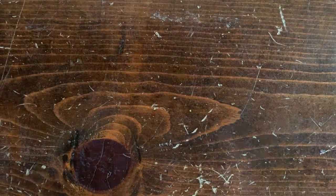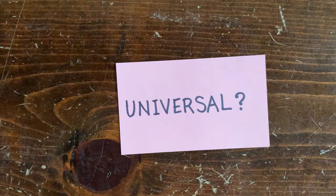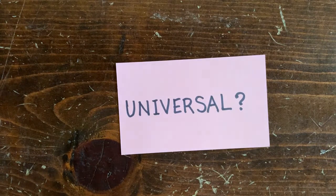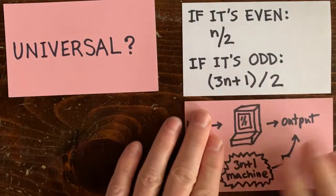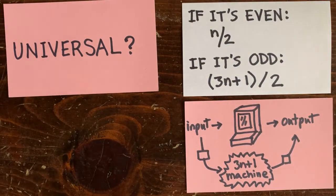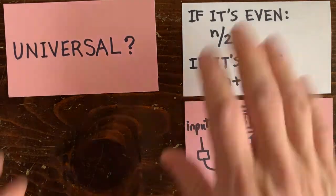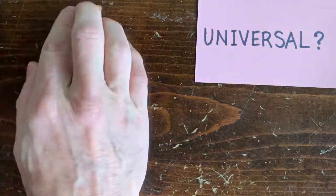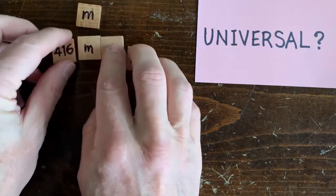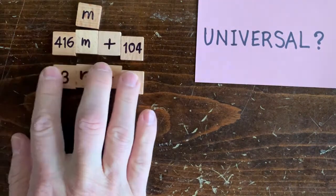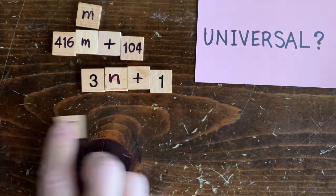Universality means the 3N plus 1 sequence machinery can be hijacked to do anything a universal computer can do. That seems crazy at first. For example, here's an algorithm to tell whether any m is prime. Take m, multiply it by 416 and add 104.